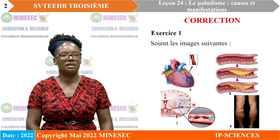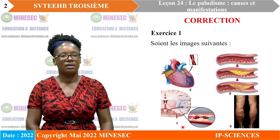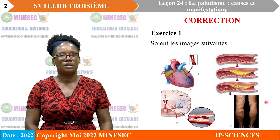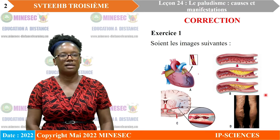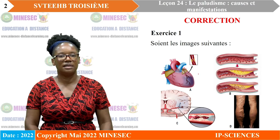Ici, nous avons bien évidemment l'encéphale, le cerveau. On voit qu'il y a une partie du cerveau où l'artère est bloquée par des dépôts de graisse. Il s'agit d'un AVC. Ici, on a des dépôts qui se font progressivement sur la paroi de l'artère : c'est l'athérosclérose. Et enfin, nous avons les varices.